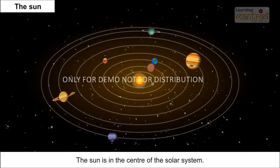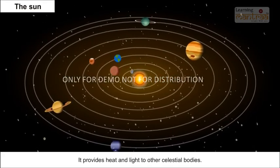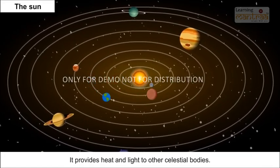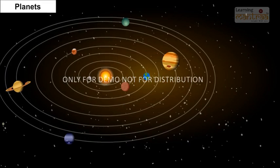The Sun is in the centre of the solar system. It provides heat and light to other celestial bodies.